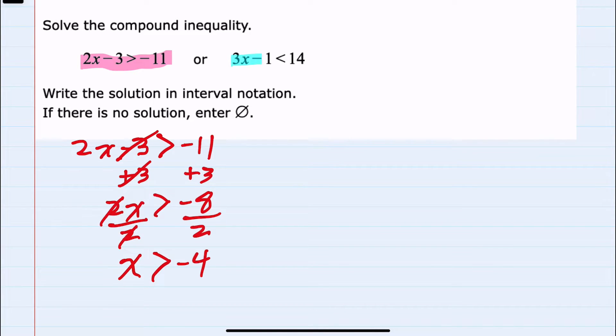Moving to the second inequality, isolating the x, I would want to add 1 to both sides. Adding doesn't affect the inequality. 3x is less than 15.